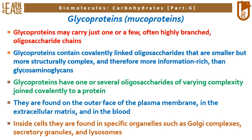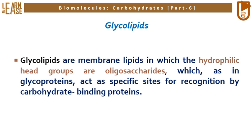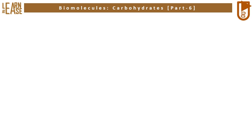The third and last subtype of glycoconjugates is glycolipids. Glycolipids are membrane lipids in which the hydrophilic head groups are oligosaccharides, which, as in glycoproteins, act as specific sites for recognition by carbohydrate-binding proteins.